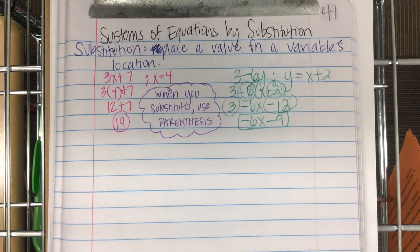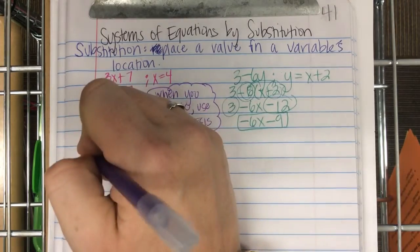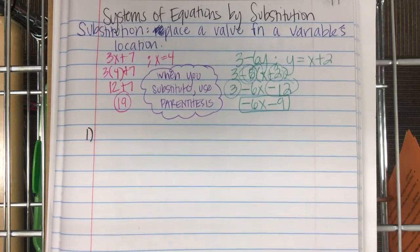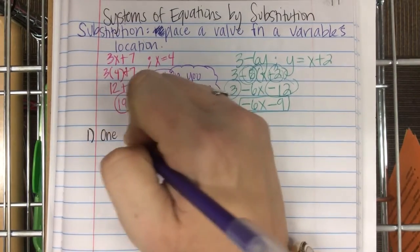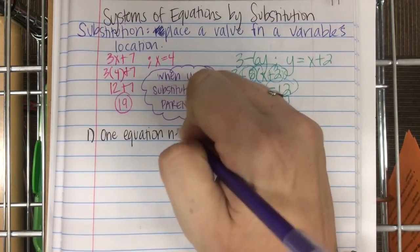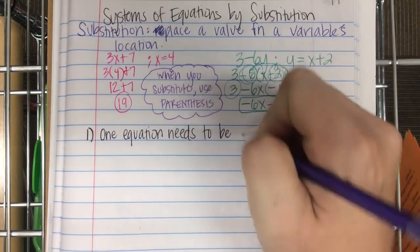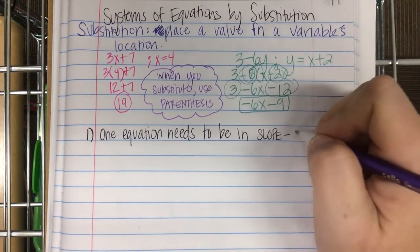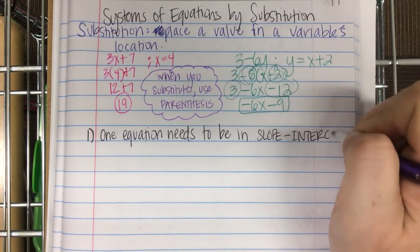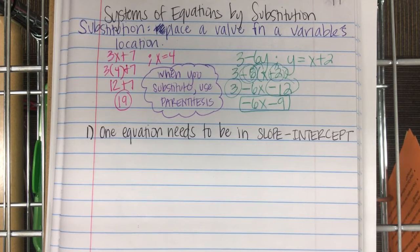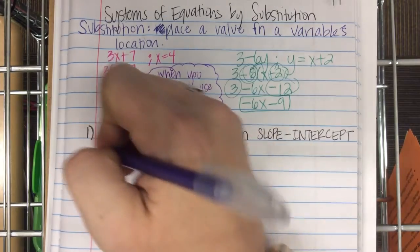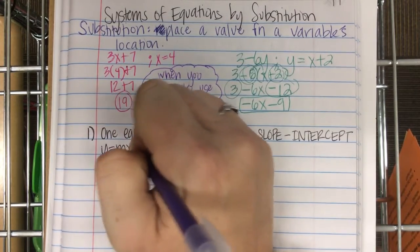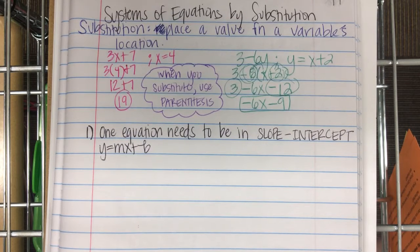All right. Let's write down the steps. How do you do this? Well, step number one. One equation needs to be in slope intercept. What does that mean? One equation needs to be in slope intercept. What? Y equals mx plus b. One equation needs to be in slope intercept.